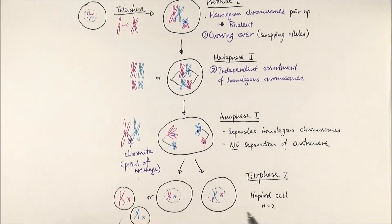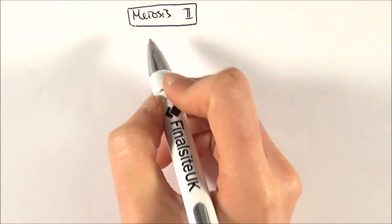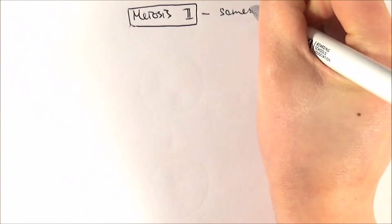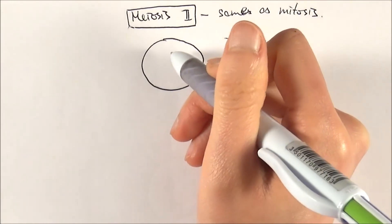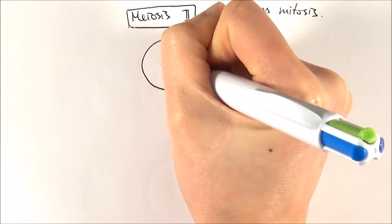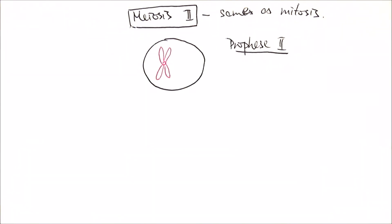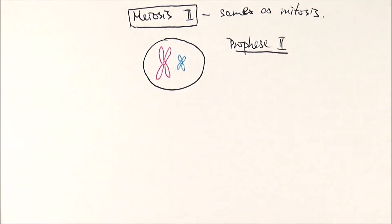In terms of meiosis two, it's pretty much the same as mitosis, which makes it easier to understand. There is no interphase between meiosis one and two — we go straight from telophase one into prophase two. We'll illustrate the process with just one cell, but the same thing happens to both. In prophase two, the nuclear envelope disappears again, the DNA coils and condenses and becomes visible once more. We have the big mum chromosome and the small dad chromosome, both with crossover bits on their chromatids.